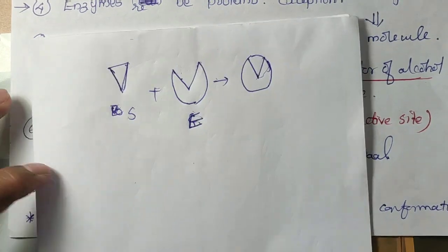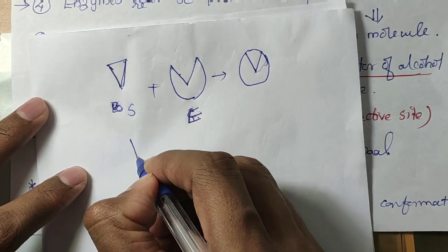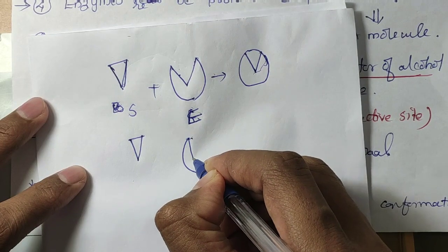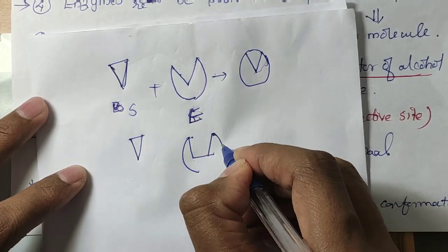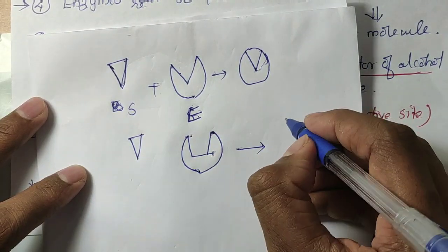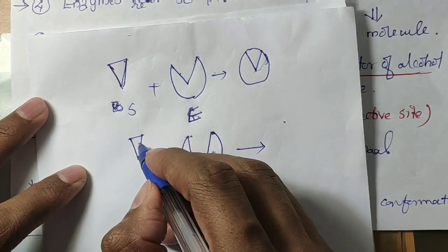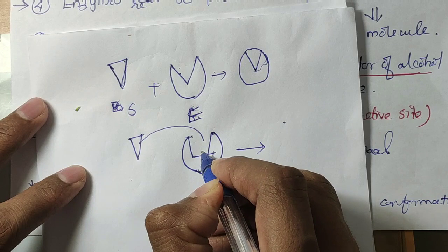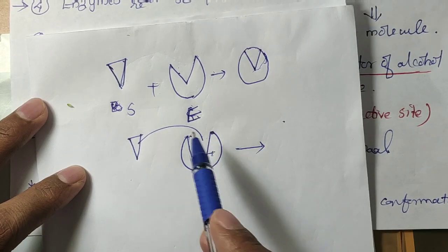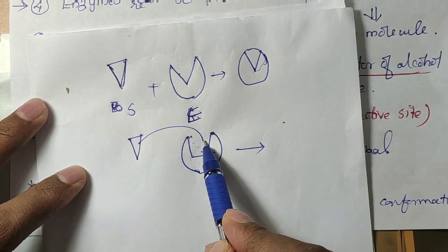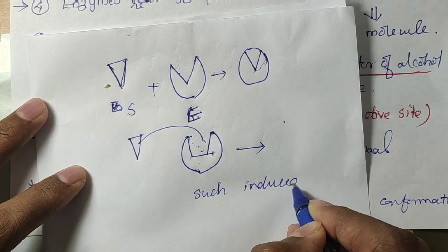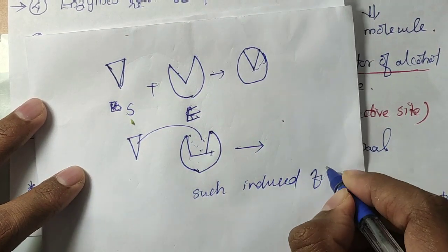There are some other enzymes where the active site won't be in a regular shape. In such cases, the substrate first binds to the active site, and then there will be conformational changes which make the substrate bind properly in the active site. Such a model is called the induced fit model.